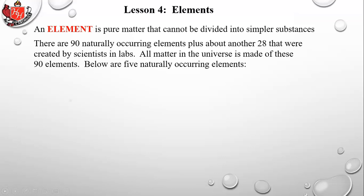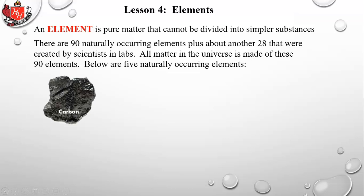Here are five naturally occurring elements. Carbon has many forms — it can be coal, diamond, or the graphite used in your pencil.